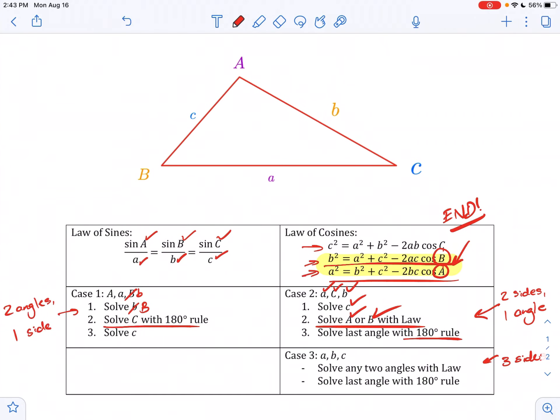Last case is a case where you absolutely have to use the law of cosines and this is where you're given three sides. Start by using the law to solve for any two angles. You can solve for the last one just using the 180 degree rule since you will know two of the angles already.